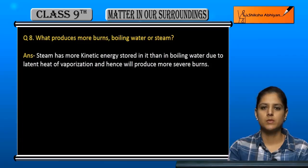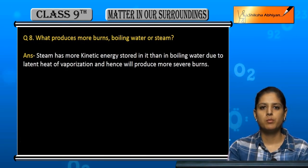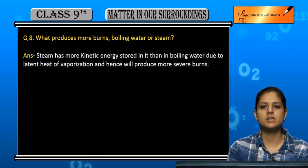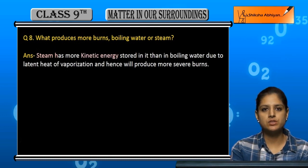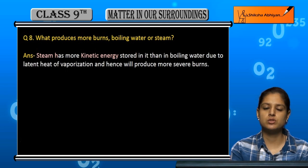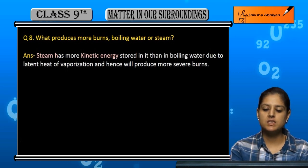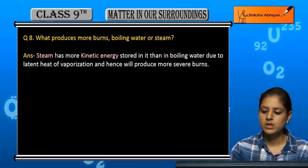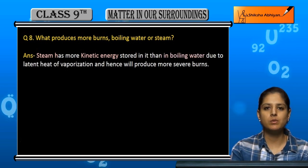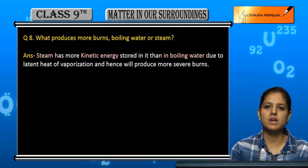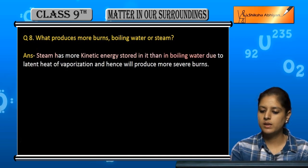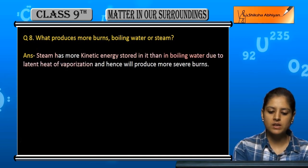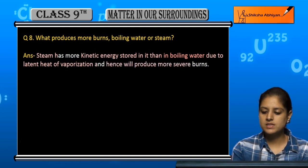Question number eight: what produces more burn — boiling water or steam? Steam produces more burns. Theek hai, kyunki steam mein zyadha kinetic energy hoti hai. Steam gaseous state mein hoti hai, is ki wajah se jo particles zyada door hote hain, is ki wajah se zyadha kinetic energy hoti hai. So boiling water jo hai woh liquid hai — as compared to gas, usmein kinetic energy kam hoti hai. So steam has more kinetic energy stored in it than boiling water, due to latent heat of vaporization.